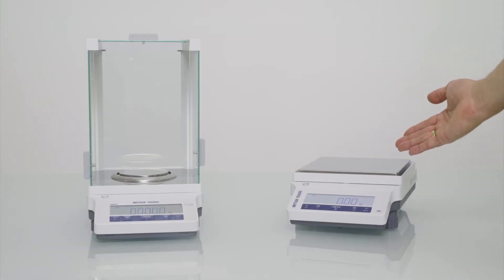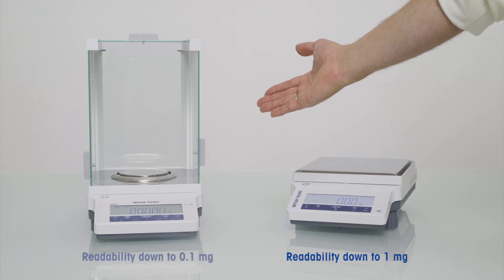Let's have a closer look. The balance on the right side is an example of a precision balance. Precision balances have readabilities of down to one milligram. On the left side you can see an analytical balance. Analytical ME balances have a readability of down to 0.1 milligram.